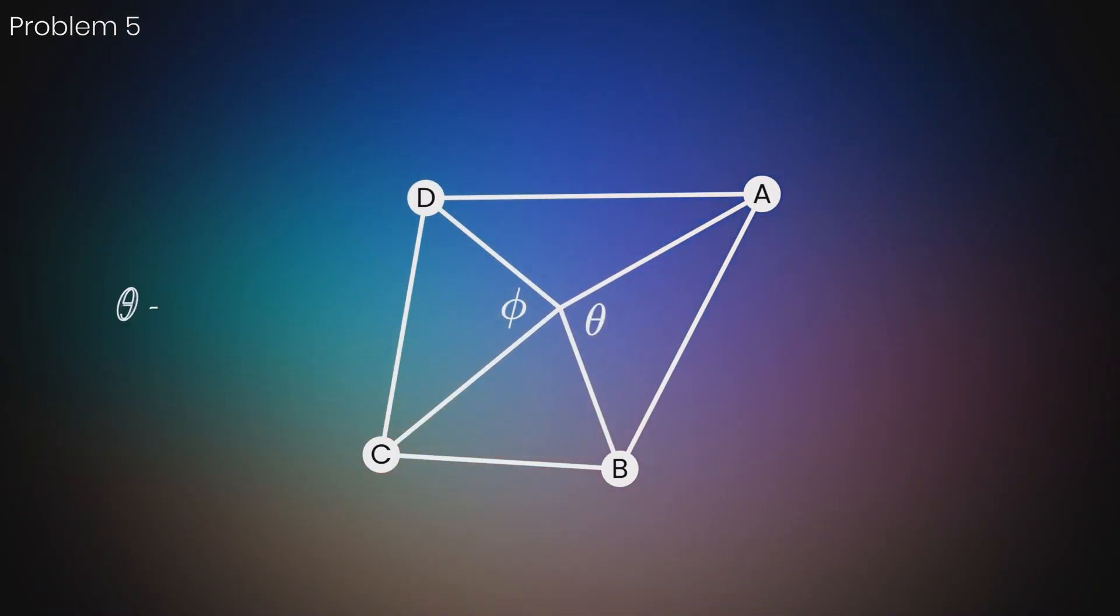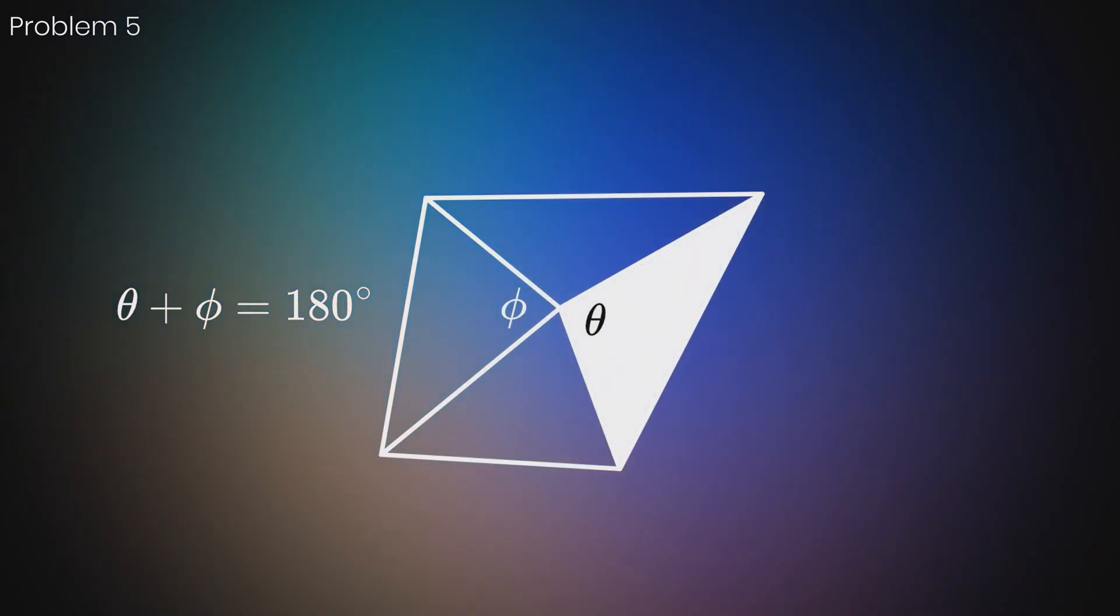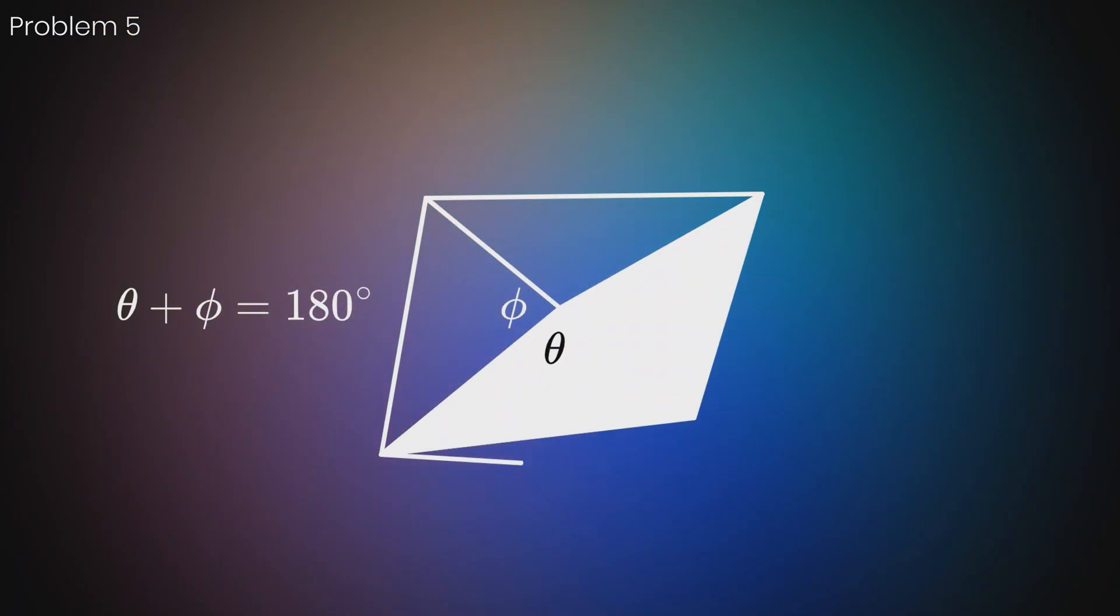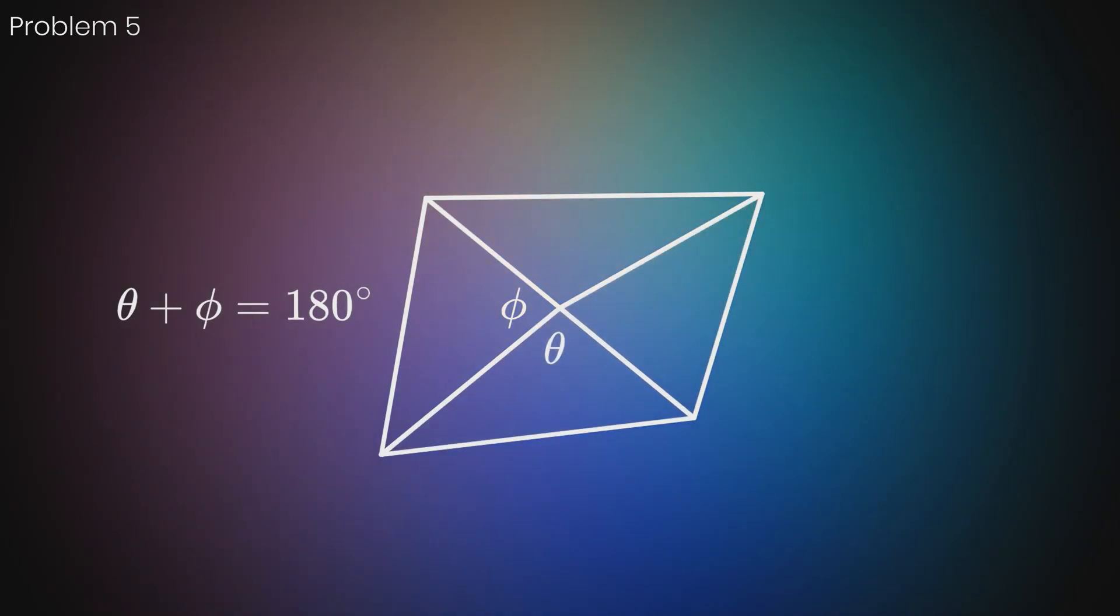Therefore, angles AOB and COD must add to 180 degrees. We can replicate these triangles using the ABO and CDO pair. The same applies for the ADO and BCO pair, but with different angles.